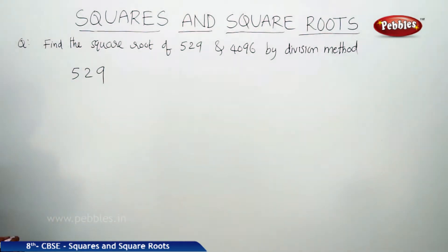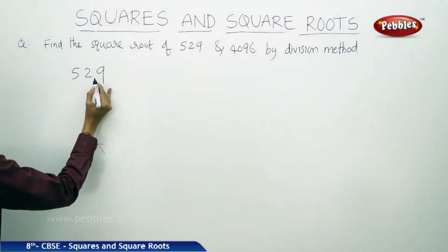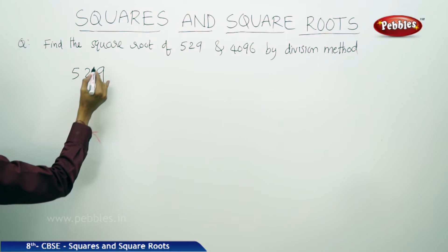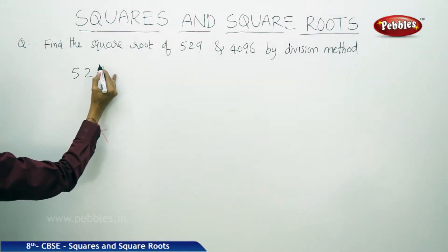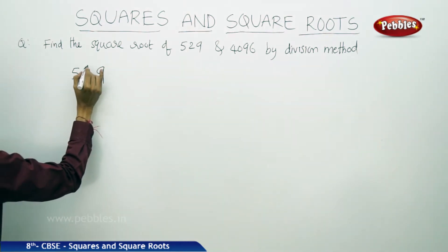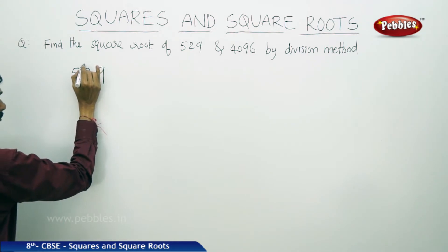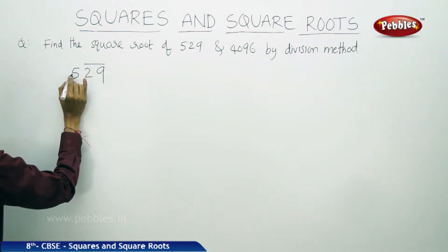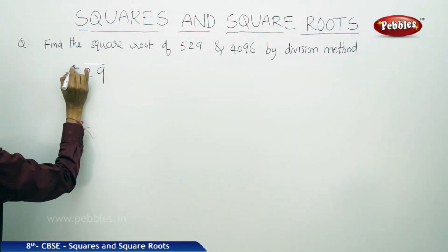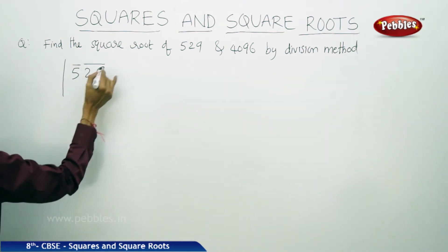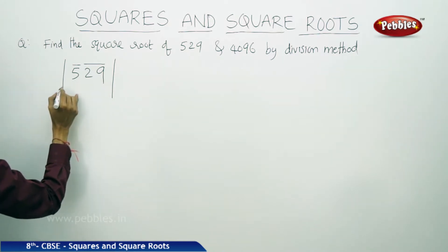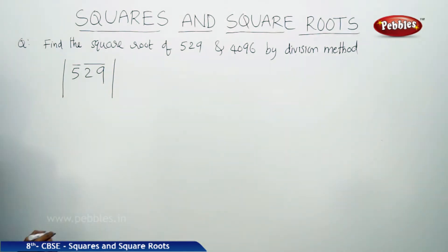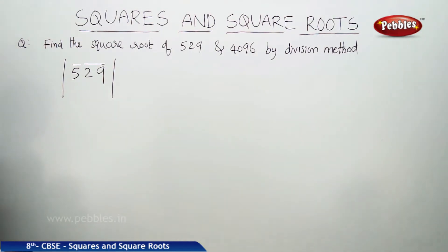Now use bar from unit's place for every two digits, from right to left. Place the bar over two numbers. But here 5 is left alone, so use the bar over 5 also. Now in the long division method, it is quite different from the normal division method. The square root division method is different.